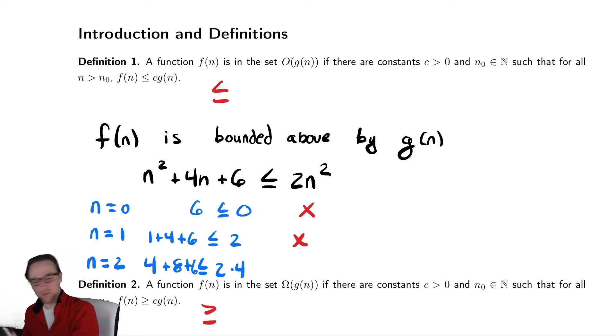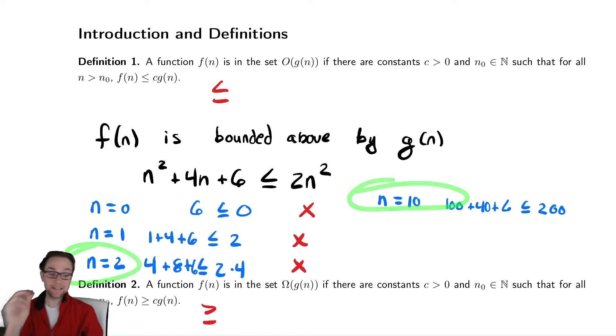What if we plug in n = 10? Let's just skip ahead and see what happens. If I plug in n = 10, on the left-hand side, I get 10² is 100 + 40 + 6 ≤ 2 times 100 is 200. Oh, it does seem to work eventually. So, eventually, this inequality is true. However, it doesn't work until sometime between n = 2 and n = 10. You could dial in on that exact value, but it turns out to not be that important.